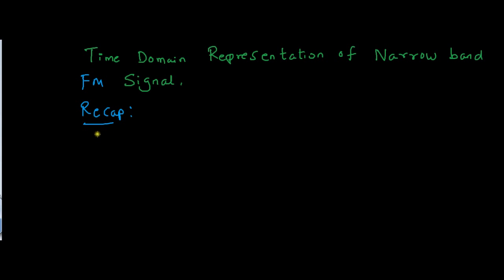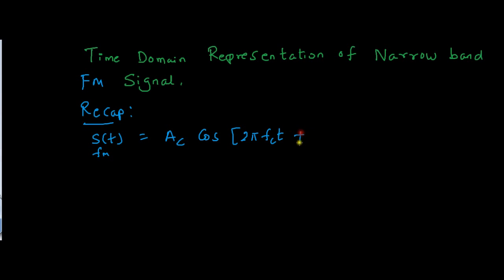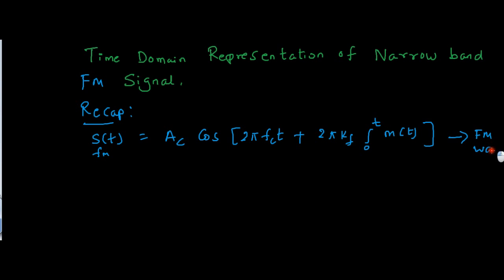We have learned how an FM signal looks like. This is the general equation for a frequency modulated wave: s(t) = Ac cos(2π fc t + 2π kf integral from 0 to t of m(t) dt). This is the equation for any FM wave.